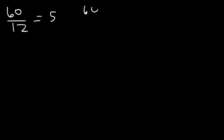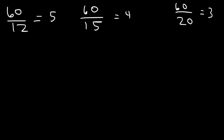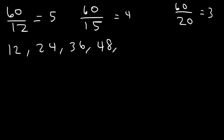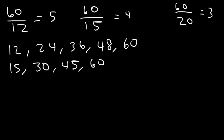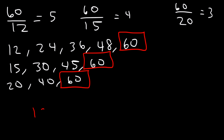Each number should divide evenly into 60: 60 divided by 12 is 5, 60 divided by 15 is 4, and 60 divided by 20 is 3. Now let's make a list. Multiples of 12: 12, 24, 36, 48, 60. Multiples of 15: 15, 30, 45, 60. Multiples of 20: 20, 40, 60. We can clearly see that 60 is the LCM between 12, 15, and 20.